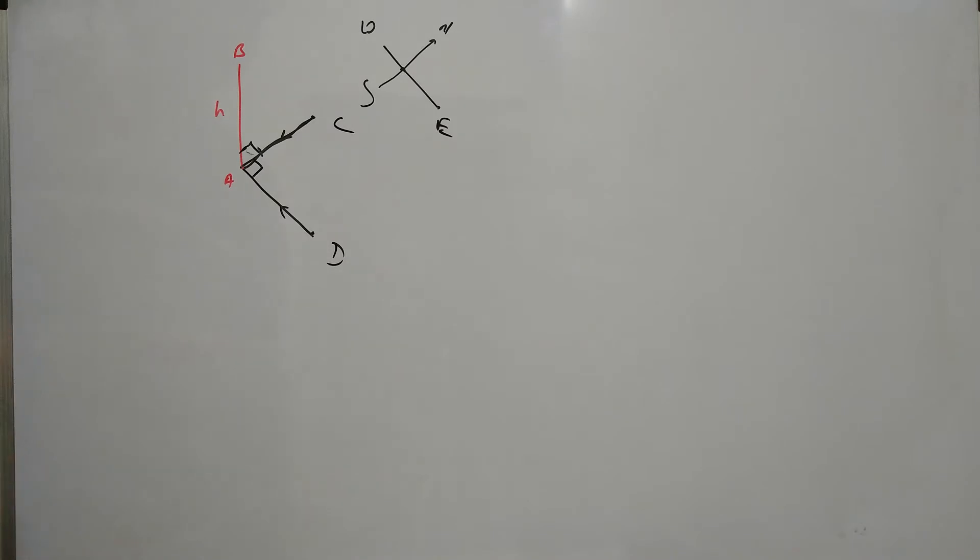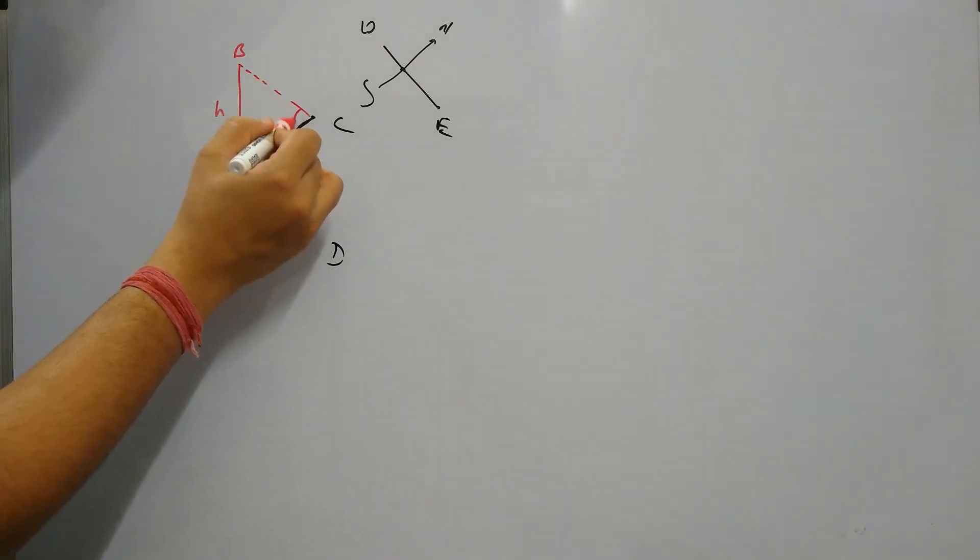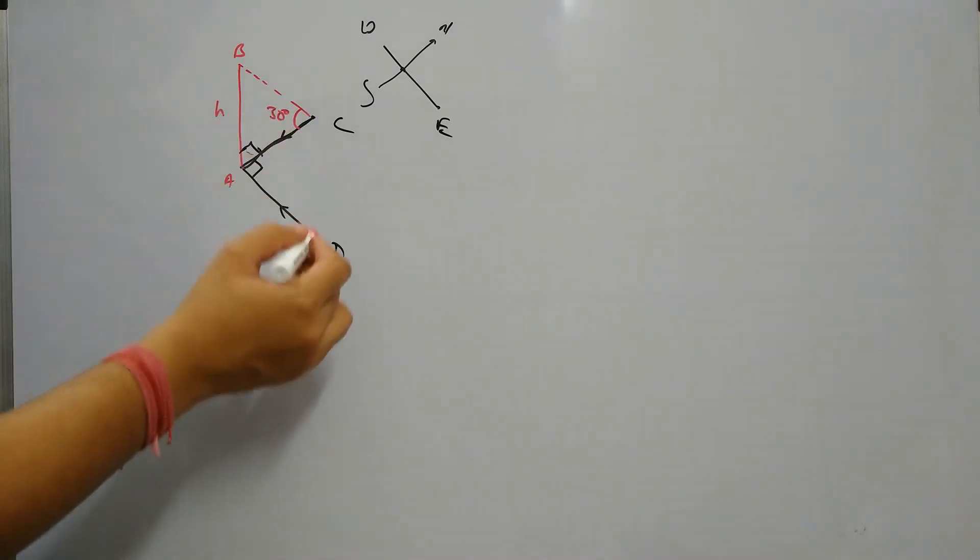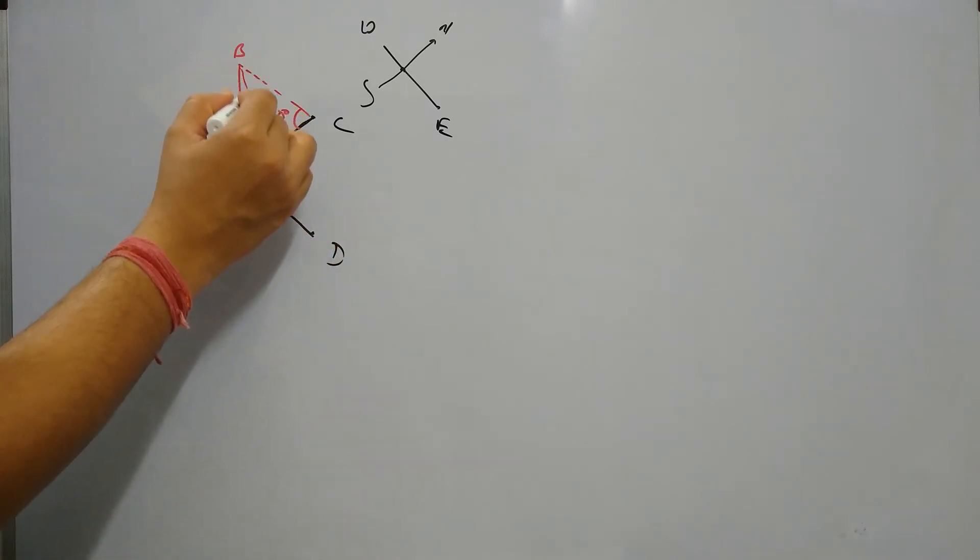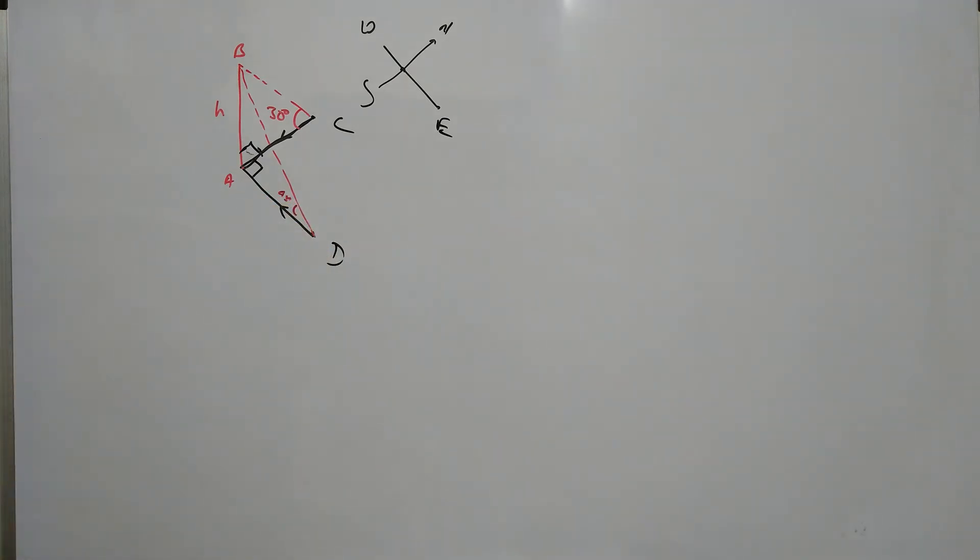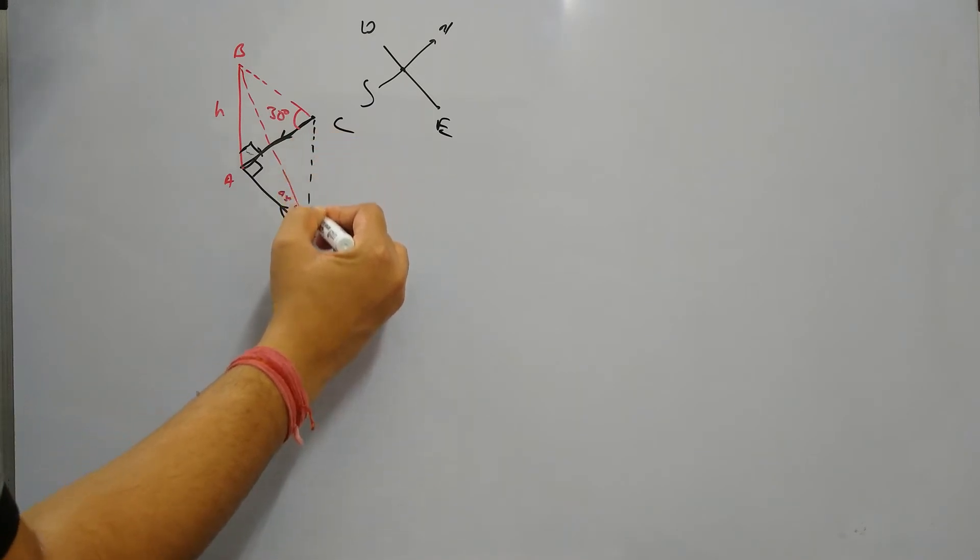Now it is given that C is making an angle of 30 degrees with the top of the lighthouse, so this angle is 30 degrees. And D is making an angle of 45 degrees with the top of the lighthouse. We need to find out the shortest distance between C and D.